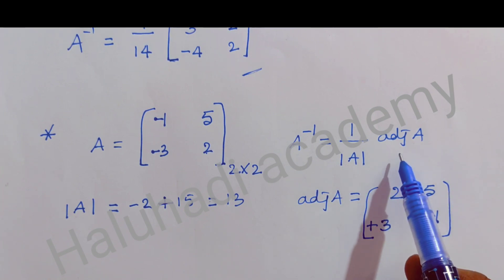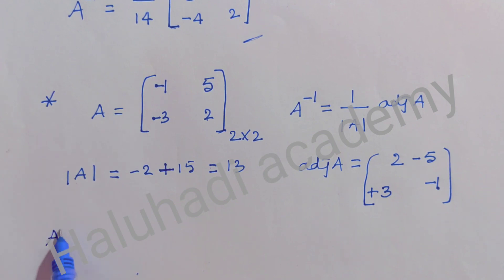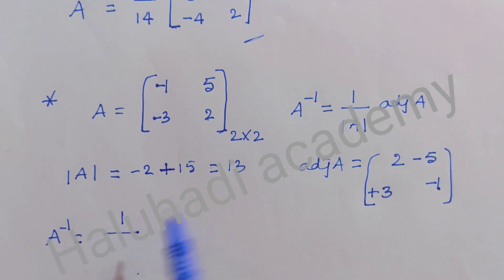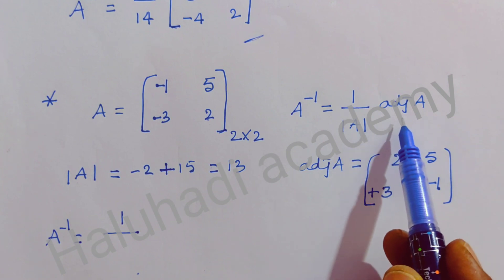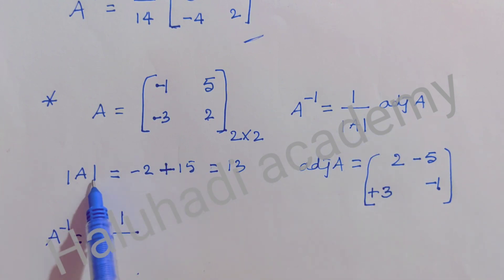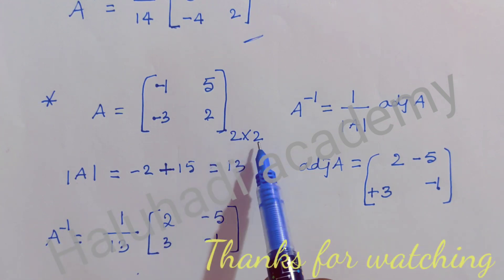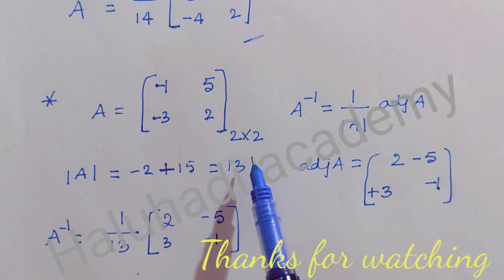Now substitute in the formula. A inverse equals 1 divided by determinant A into adjoint A. Determinant A value is 13. Adjoint A value is 2, -5, +3, -1. And this is the value of A inverse of the matrix.